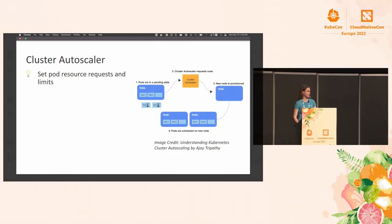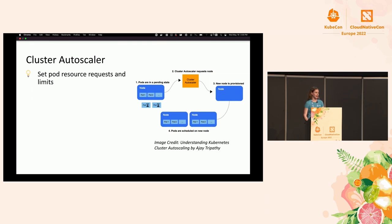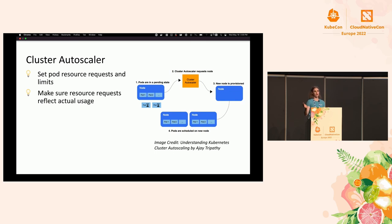Let's quickly touch on the cluster autoscaler. One thing you have to know is you must set pod resource requests and limits — otherwise, the cluster autoscaler can't know how many nodes to add or take away. You also need to make sure your resource requests reflect your actual usage. If a pod is only using 10% CPU but you've requested 100%, the autoscaler treats it as 100%, potentially leading to unnecessary waste.